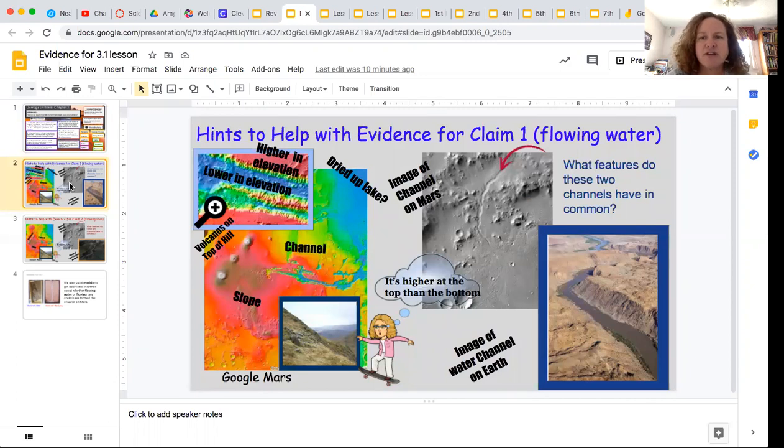So here is the evidence we have for claim one, which is flowing water. Remember that this is the image of the channel on Mars. So we've compared it to other images of channels that were formed by water, flowing water on Earth. And we also looked at Google Mars. And we noticed that it's on a slope.